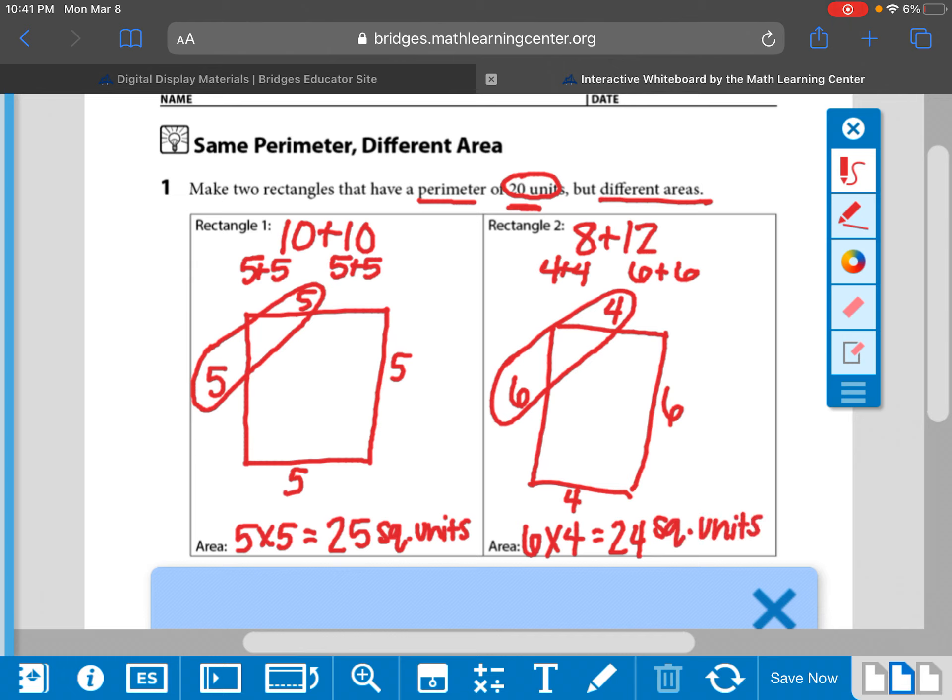So each of these shapes has a perimeter of 20 units but they have different areas. So this fits the rules and we can move on.